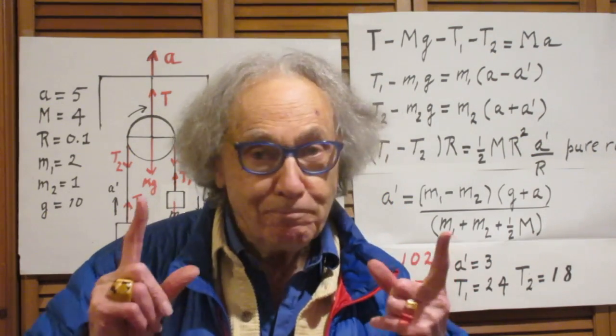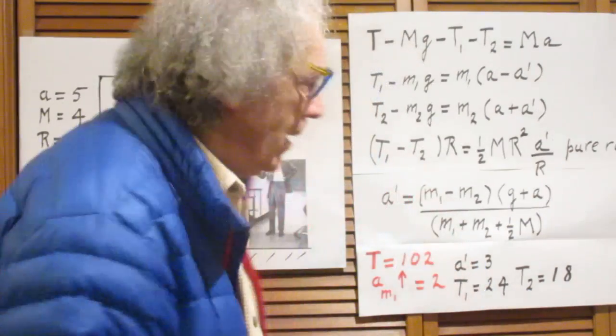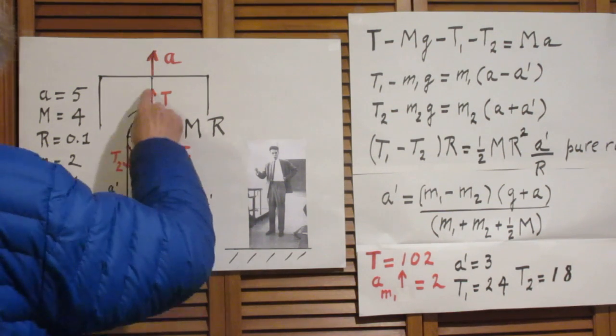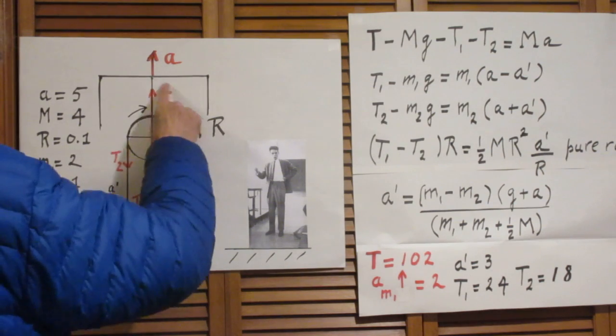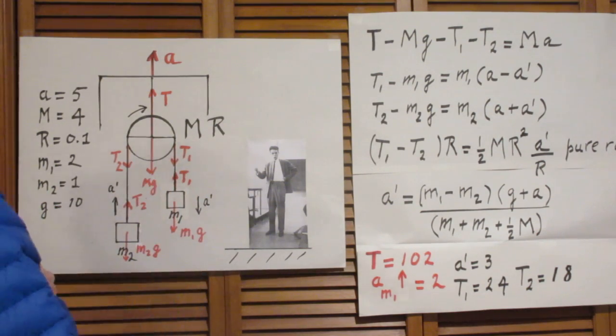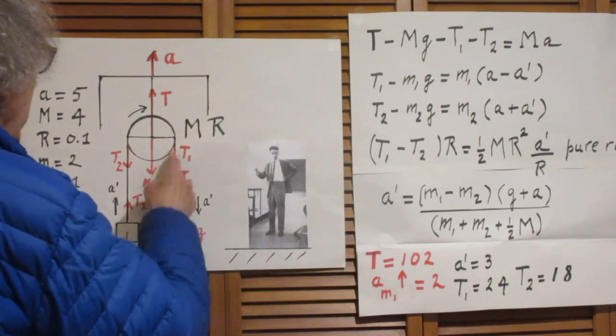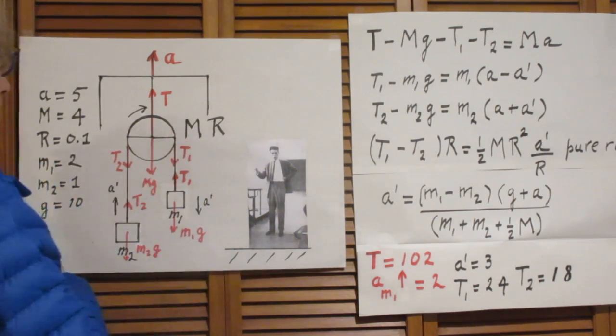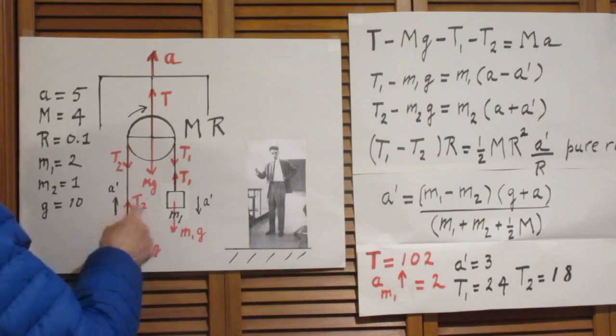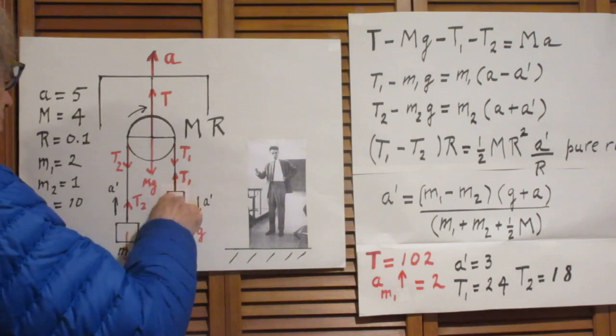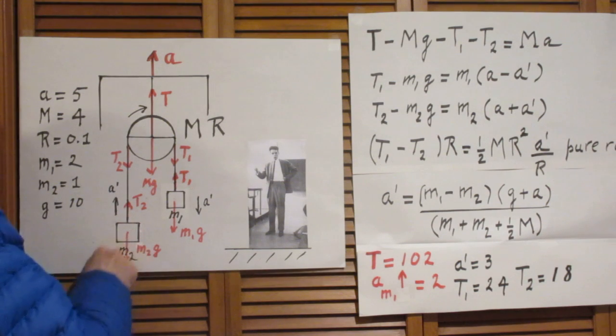Let's first put in all the forces that we will need. The tension in this string is capital T, and gravitational force down capital Mg. The tension in this string here T1 upwards, and downwards there. The tension in this string T2 upwards, and downwards there.